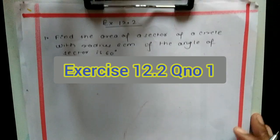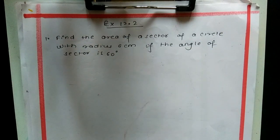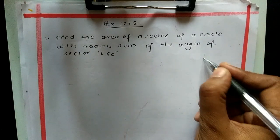Hello students, today I am going to explain question number one from exercise 12.2. This exercise is based on finding the area of sector and the area of segment of a circle.